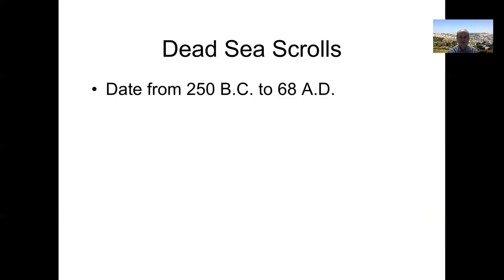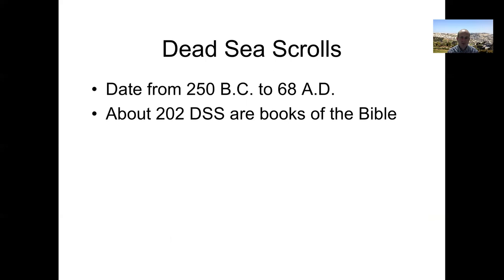So let's talk about the Dead Sea Scrolls. They're a little older than that — they date from about 250 BC to 68 AD. About 202 of them are books of the Bible. There are quite a few other Dead Sea Scrolls, and how exactly you count a book of the Bible can depend. I'm counting a few Greek translations that have shown up in the Dead Sea Scrolls as books of the Bible too.